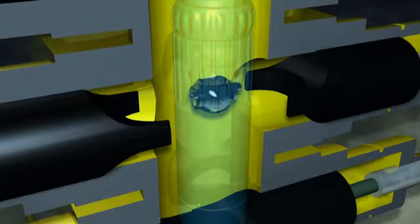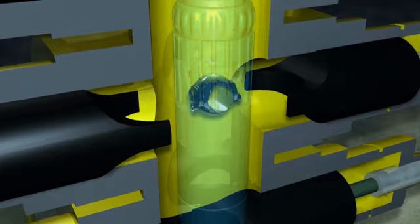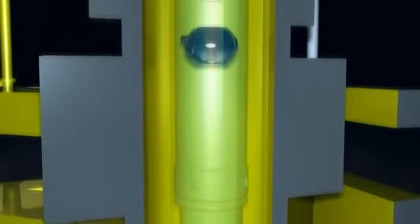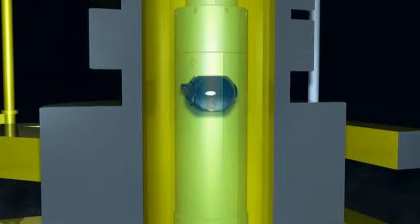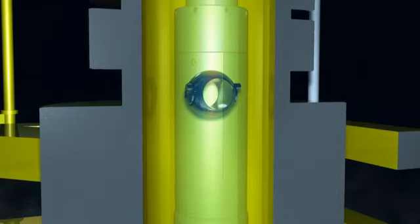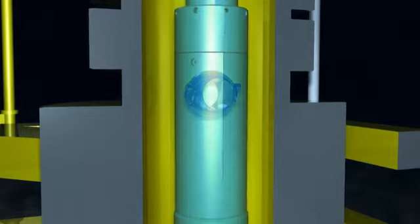With the subsea test tree closed and the well isolated, the emergency disconnect latch can be disengaged to allow the landing string above the subsea test tree to be retrieved. The retainer valve is closed to retain the hydrocarbon column above the valve and also vent any trapped pressure between the subsea test tree and retainer valve.